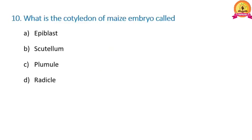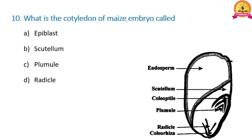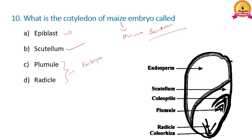Next: what is the cotyledon of maize embryo called? Maize is a monocot, and in monocots the single cotyledon is called the scutellum. So B is the correct option. Epiblast is the rudimentary cotyledon found in a dicot embryo. The plumule and radicle are both parts of the embryonal axis — the plumule gives rise to the shoot, and the radicle gives rise to the root.